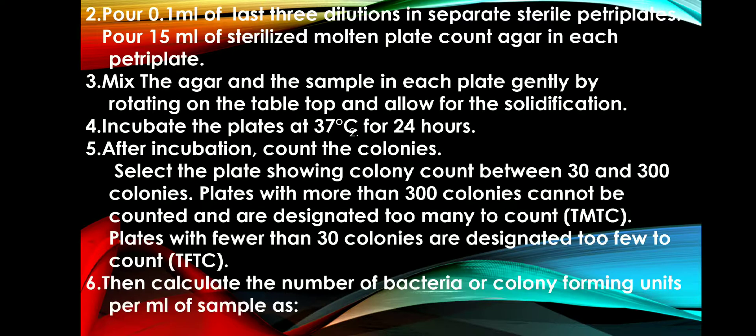Pour 0.1 ml of the last 3 dilutions into separate sterile petri plates. To this, pour 15 ml of sterilized molten plate count agar into each petri plate. Mix the agar and the sample in each plate gently by rotating on the tabletop.